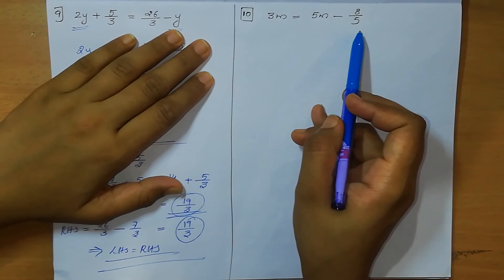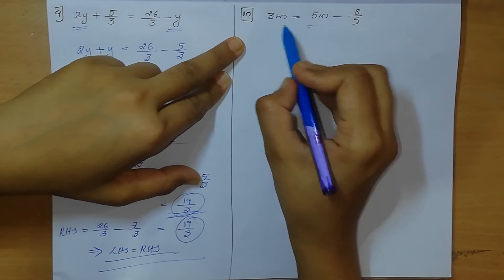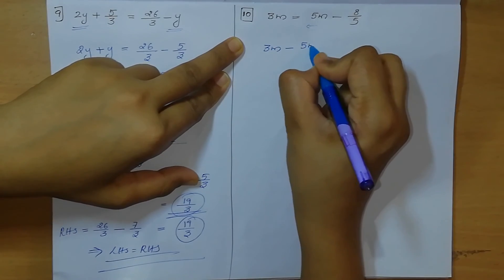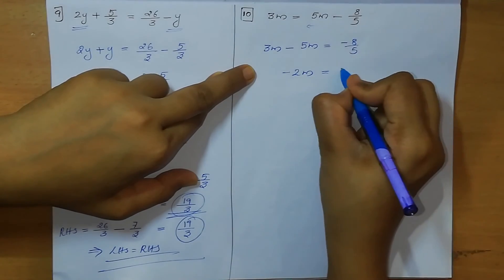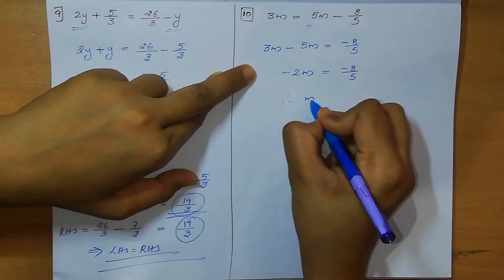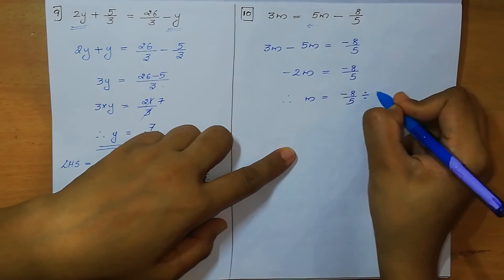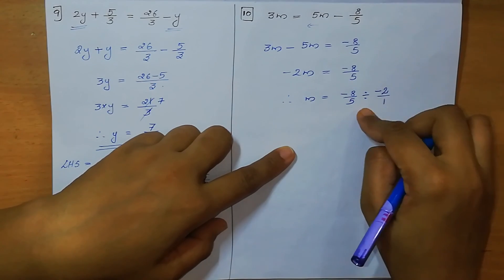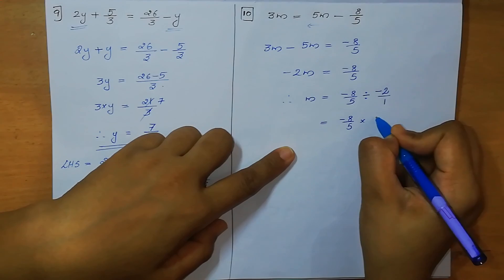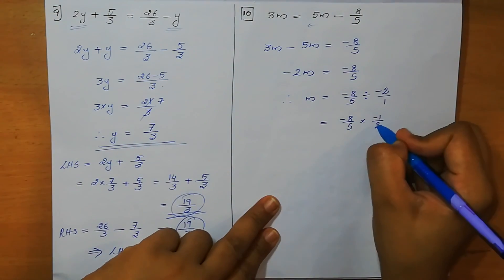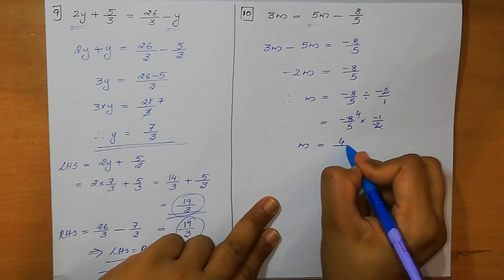Question number 10: 3M = 5M minus 8/5. Shifting 5M to the left: 3M minus 5M = minus 8/5, so minus 2M = minus 8/5. Dividing both sides by minus 2 means multiplying by minus 1/2: M = (minus 8/5) × (minus 1/2) = 8/10 = 4/5. So M = 4/5.